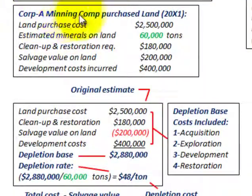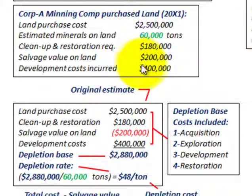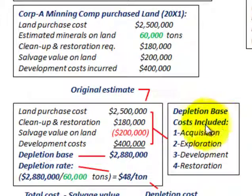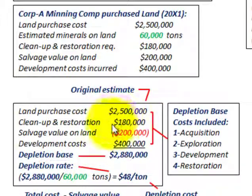For our example, Corporation A, a mining company, purchased this land. There is a land cost, estimated materials on the land, cleanup and restoration costs, salvage value on the land, and development costs incurred in mining this tract. To review how we calculate the depletion base and depletion rate: the costs included in the depletion base are acquisition, exploration, development, and restoration. We take the land purchase cost, add cleanup and restoration costs, subtract the salvage value on the land, and then add any development costs.